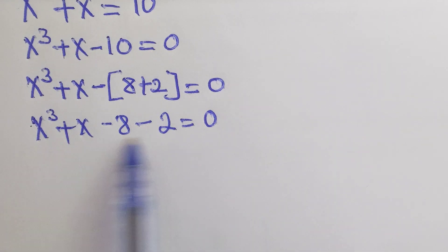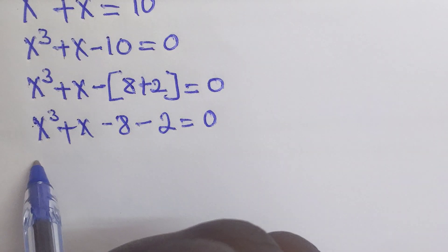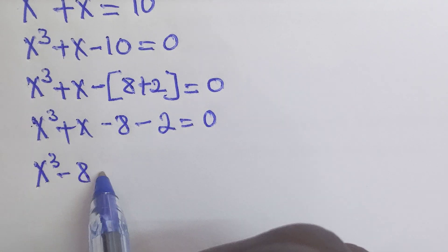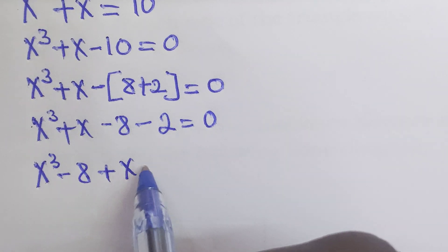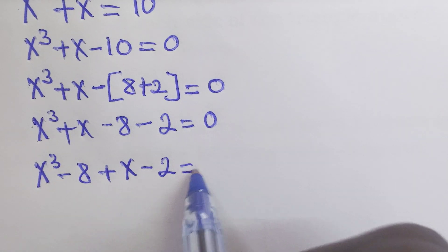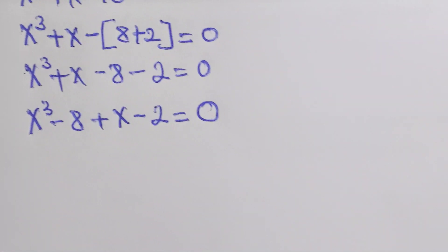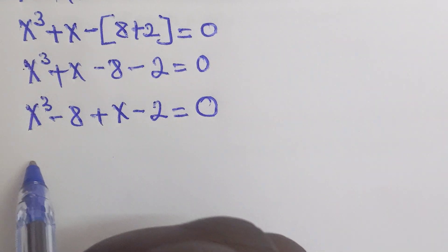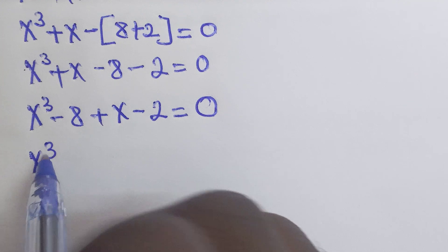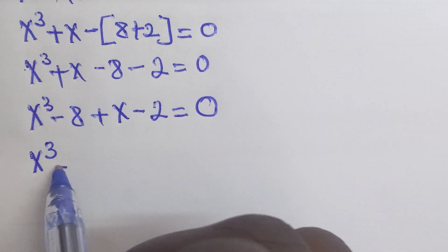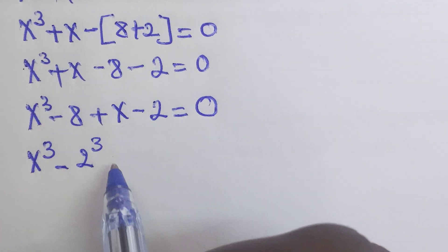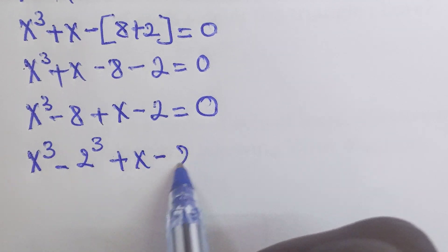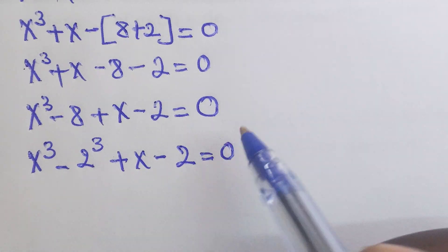The next step is to regroup these numbers. We have x to the power of 3 minus 8, plus x minus 2, which equals 0. This will be equal to x to the power of 3 minus 2 to the power of 3, plus x minus 2, which equals 0.